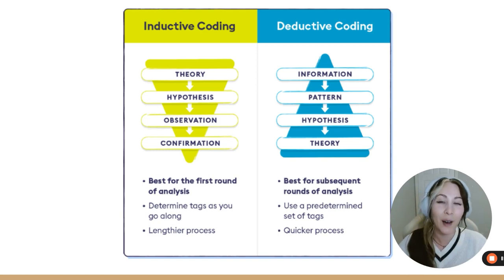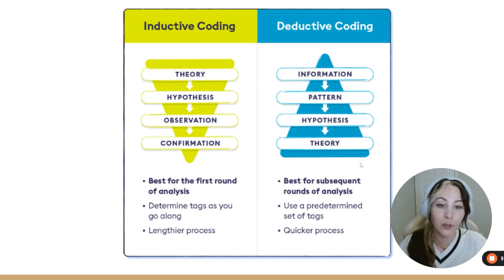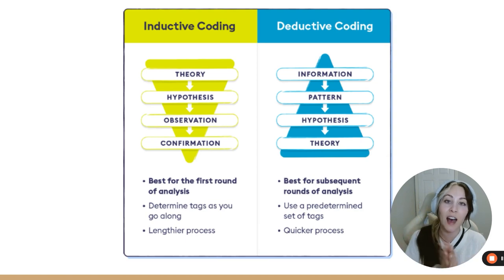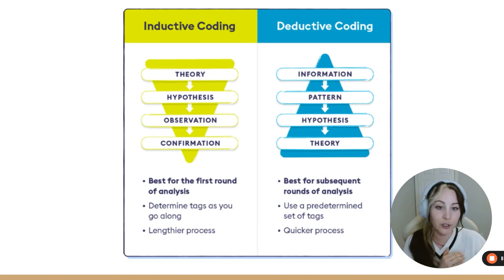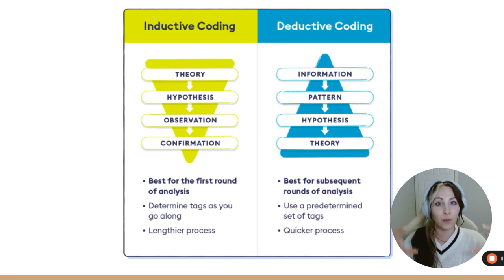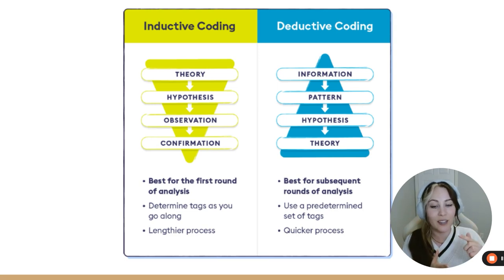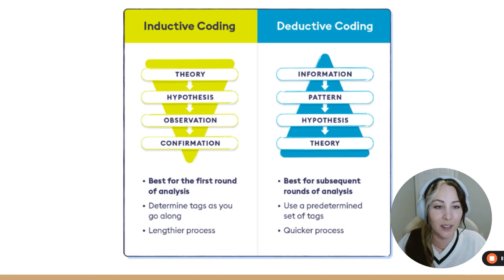Deductively, it starts with information, pattern, key hypothesis, then theory. This is best for subsequent rounds of analysis — especially when communicating professionally. It uses a predetermined set of tags, which is what we're going to talk about, and it's a quicker process. People who are deductive use predetermined frameworks, so from point one to two to three to four it's all lined up with no buffer.